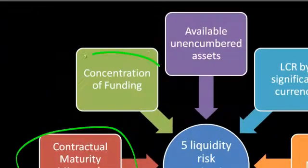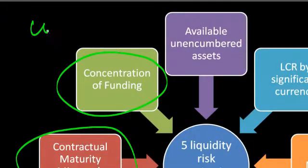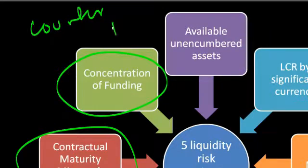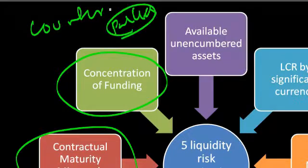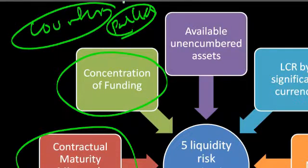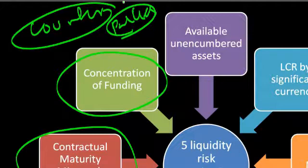The second was concentration of funding. With respect to a given counterparty, or with respect to a collection of counterparties, is your funding risk associated and linked with a given name? And within that given name, are you exposed to significant liquidity exposure if that given name either goes under, does not renew, or refuses to renew that line?